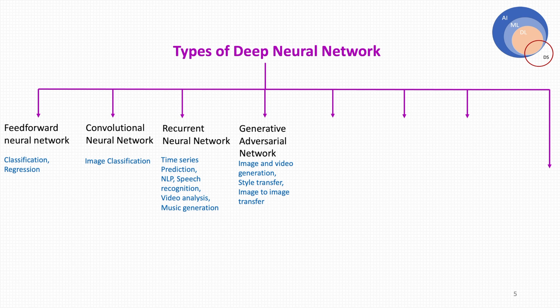Next is GAN — Generative Adversarial Network — a method for generative modeling that generates a new set of data based on the training dataset that looks similar. Nowadays we are hearing the term 'deep fake,' which is the best example of a GAN. A deep fake is a video of a person in which their face or body is digitally altered so that they appear to be someone else. Next are autoencoders — a class of deep learning that can learn efficient representations of input data with no need for labels.